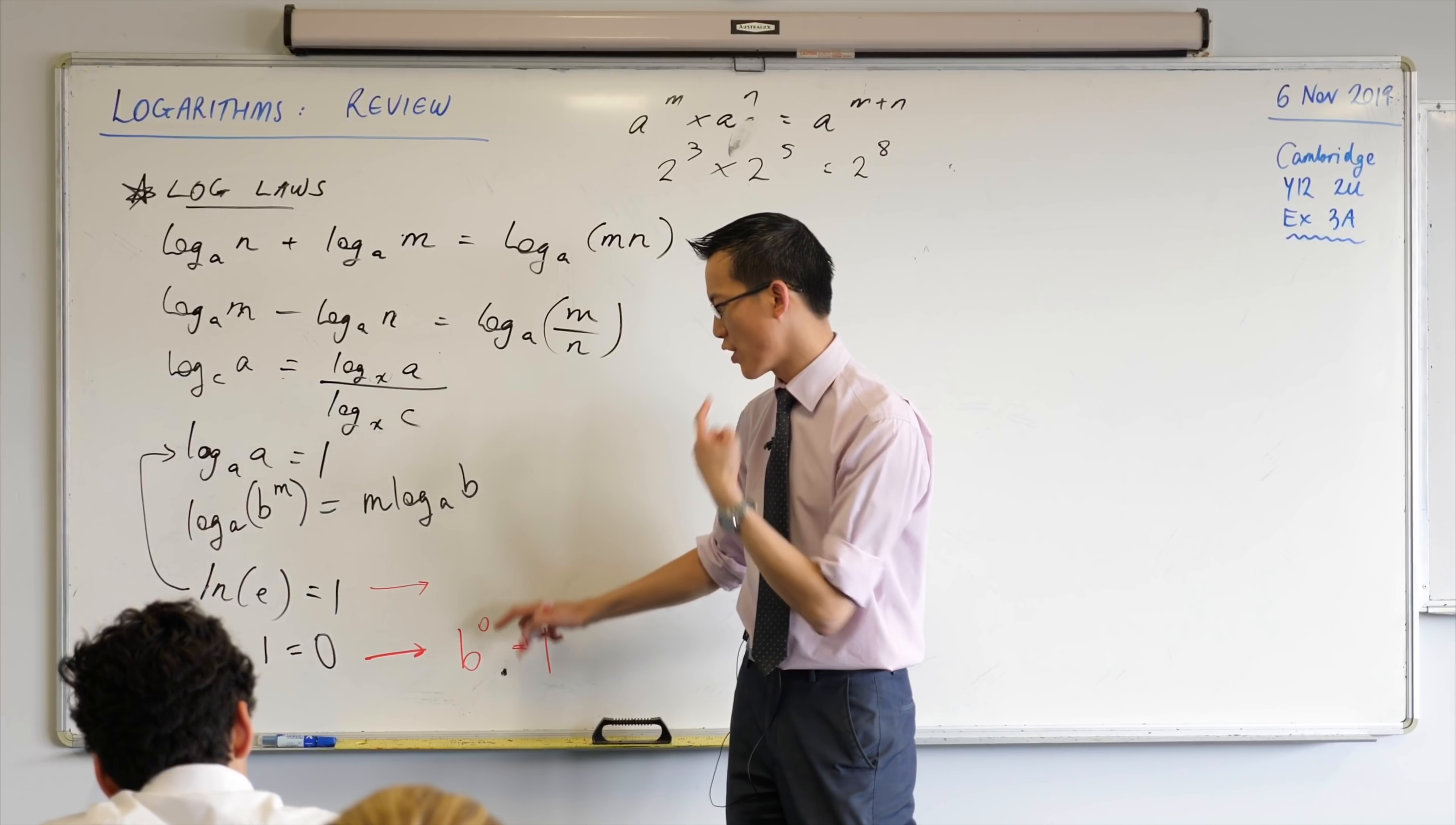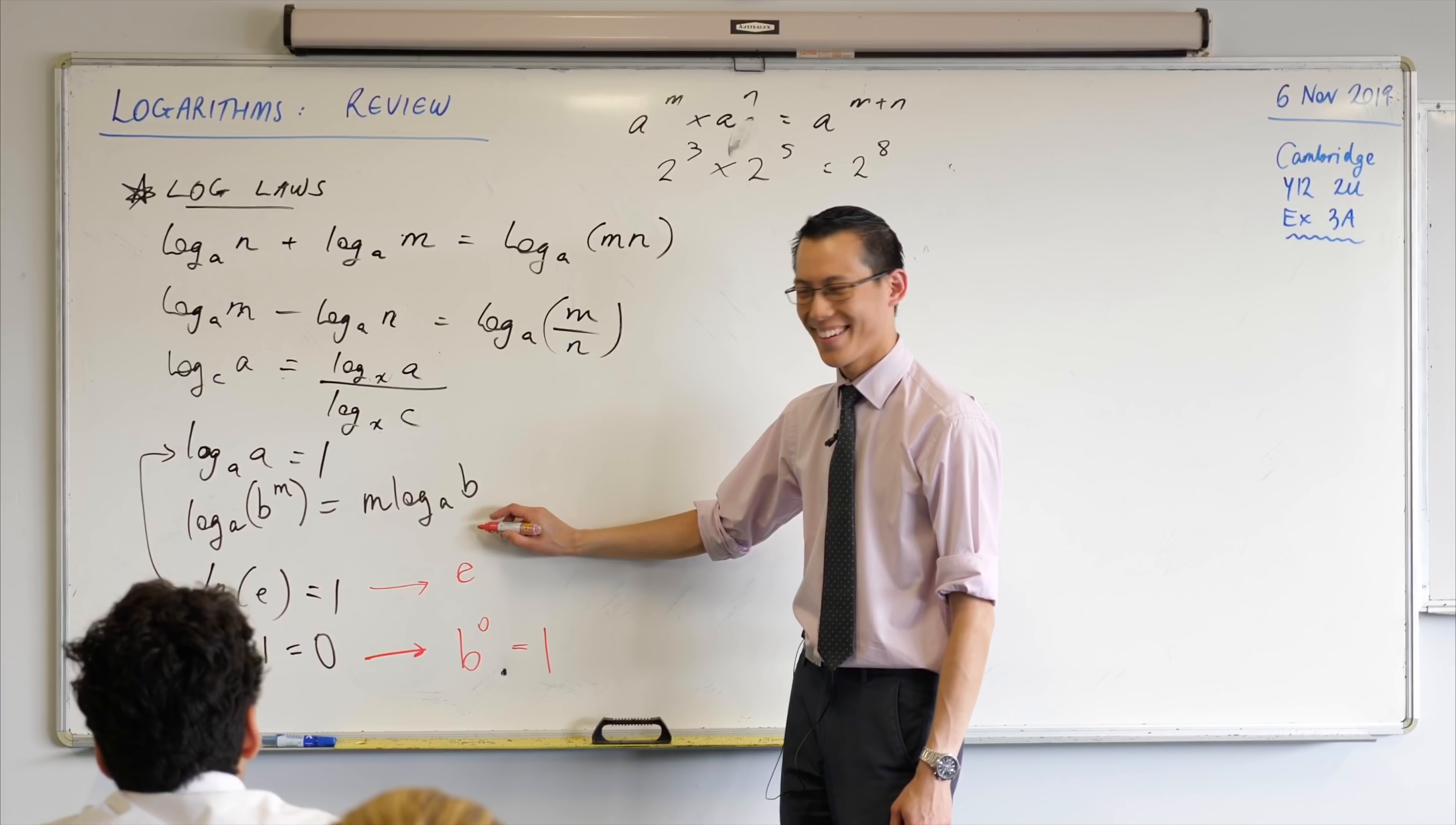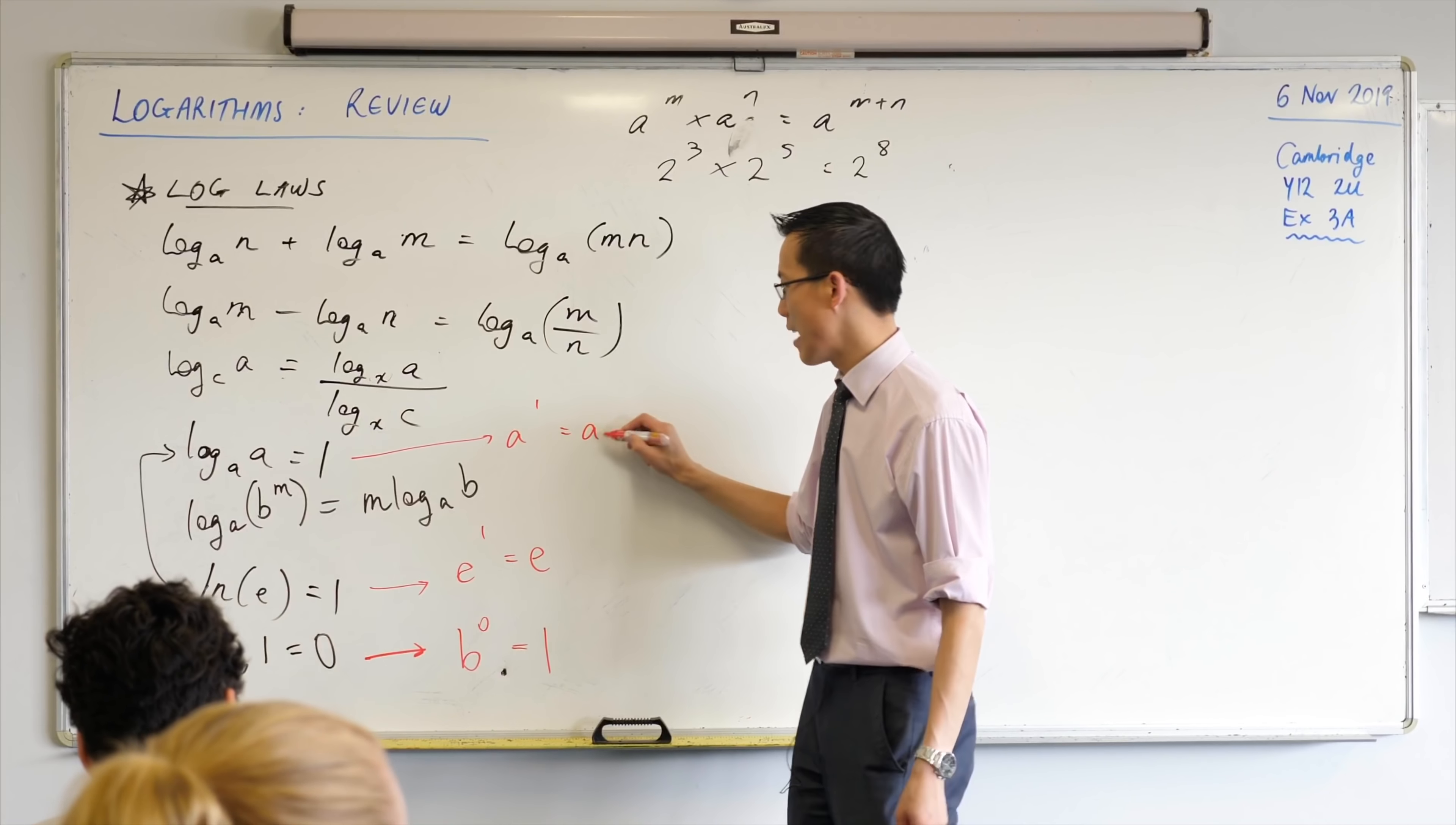What would be the index equation that comes with this? That second and last one. I'll give you a clue. See that base there? It becomes the base here, right? So what should the base be here? e. e, right? e to the power of? e. Is it e to the power of e? So e to the power of 1 equals e. Which is the same as a to the power of 1 equals a. Okay, now,